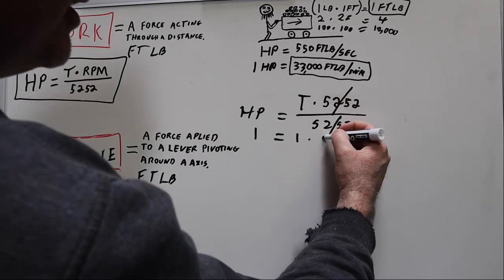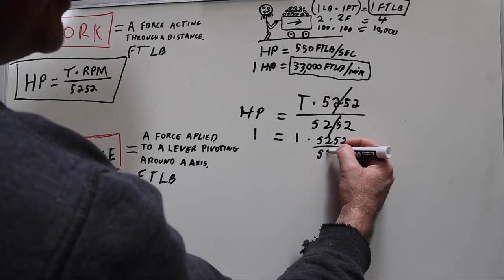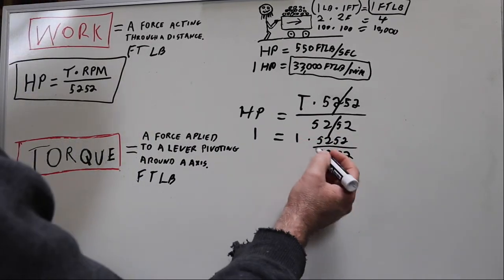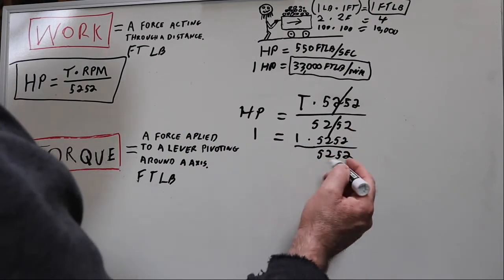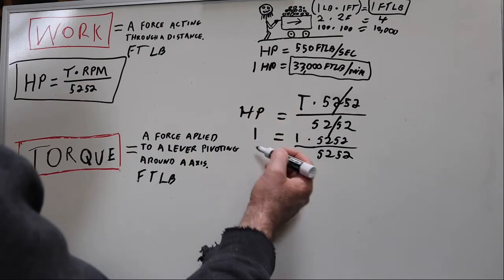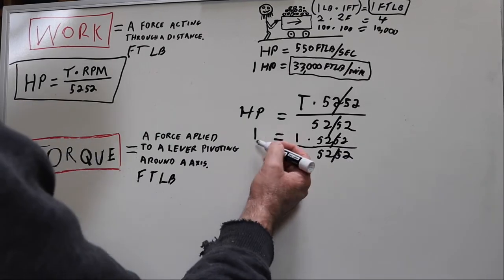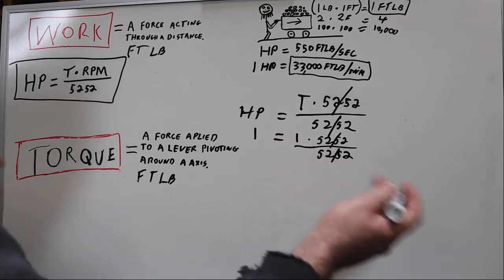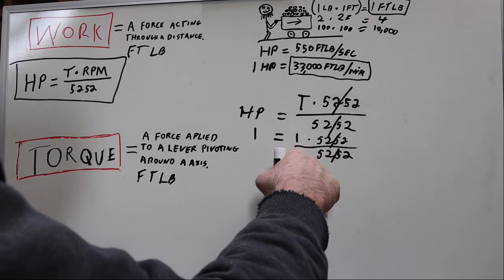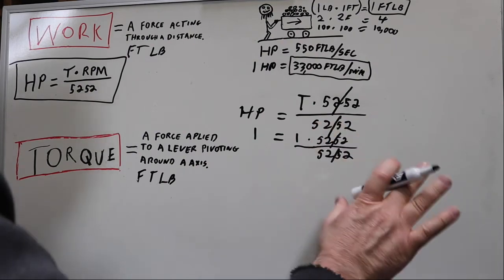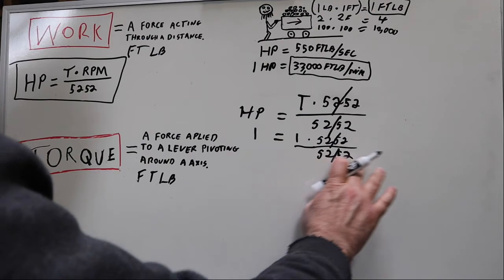And so by canceling this out, that's how we get to that. And you can see: one horsepower, one foot-pound of torque, we can cancel that 5252 - torque and horsepower equal. And this holds true no matter what the engine is. If this is 400 horsepower, it's going to be making 400 foot-pounds of torque in order to do that at 5252 RPMs. That's the only RPM it works at.